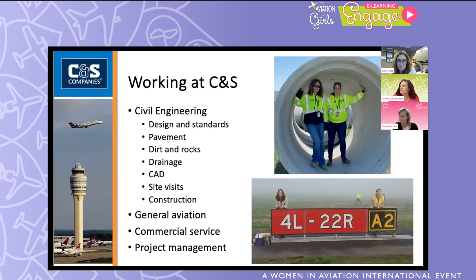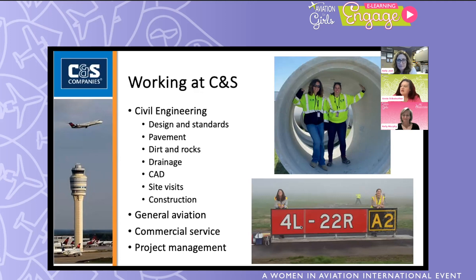Kelly describes photos of project work, including a large sign at Detroit Metro Airport showing runway designation '4 Left / 22 Right' and taxiway 'A2.' She explains that runway numbers relate to compass direction and taxiway designations use letters — with yellow lettering for taxiways and white for runways. Underground infrastructure work — utilities, pipes for water, electric, and gas — is also a major part of civil engineering at airports.